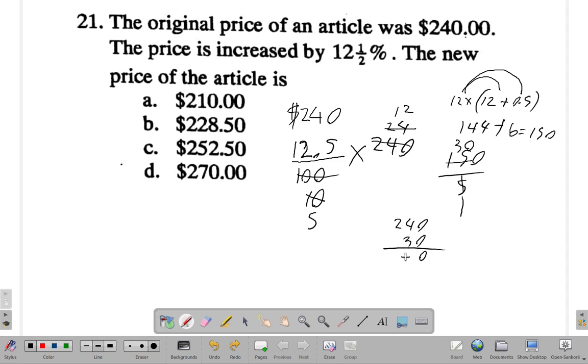0 and 0 is 0. 4 and 3 is 7. 2 and 0 is 2. So, the new price is $270. So, 270.